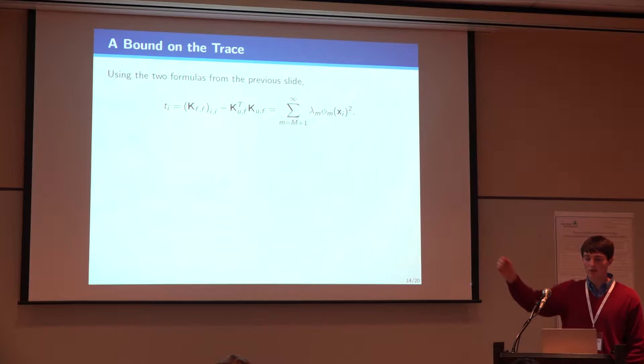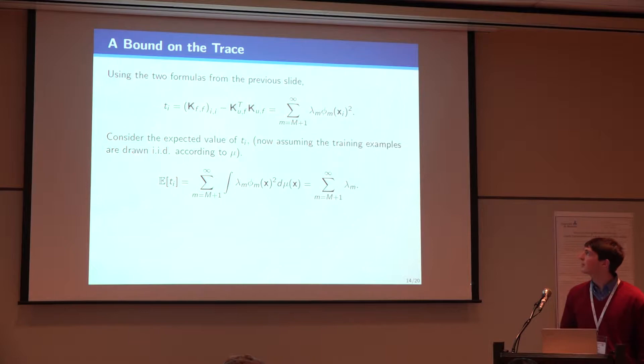So now we can start to talk about the trace. And in order to do that, we just subtract these two terms. And since we're on the diagonal, we have the eigenfunction squared times the eigenvalues, and we just have the tail of this sum.